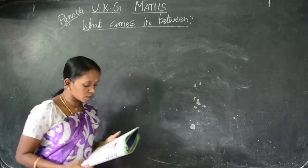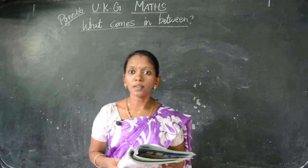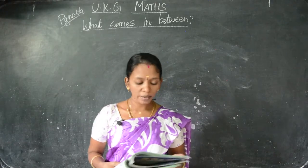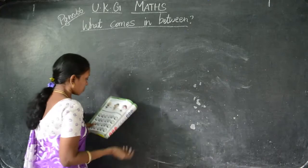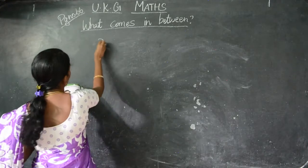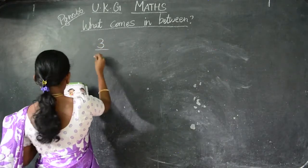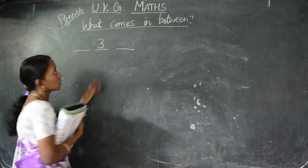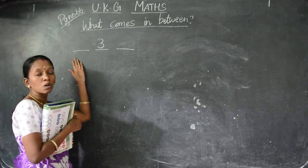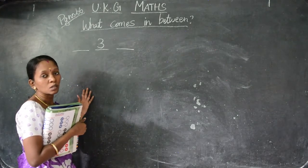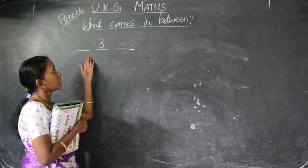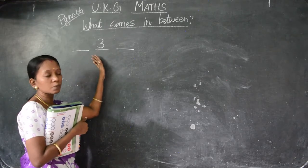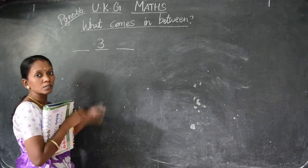Okay, see, they have already given the between numbers. Now we have to find out the before and the after number. See, 15 is the number in the middle, so that is the between number. So the before number and the after number we need to find. Already you know the numbers, so find out and say. The middle number is given.